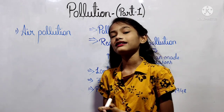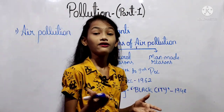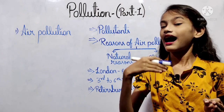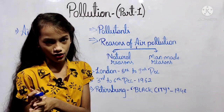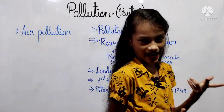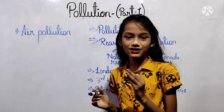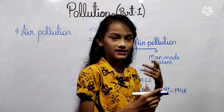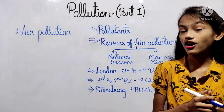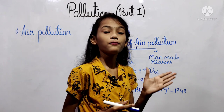The second natural cause is earthquake — poisonous gases and water vapor from inside the earth are released into the air. Third is cyclones and dust storms — dust, soil, garbage, pollens, and microbes are mixed with the air. Fourth is forest fire — forest fire releases carbon dioxide, sulfur dioxide, and smoke into the air.